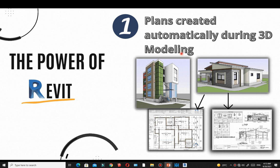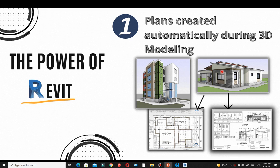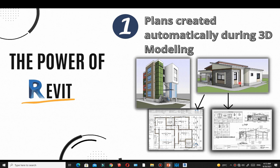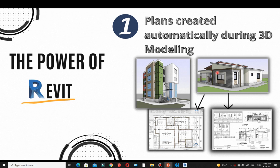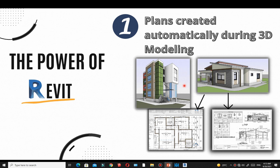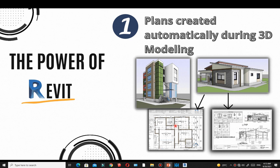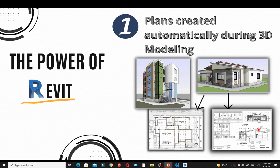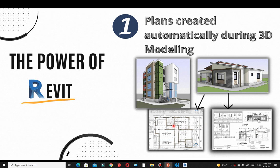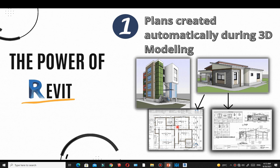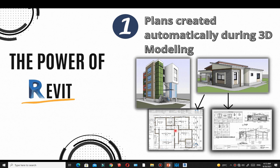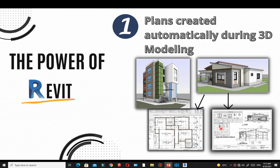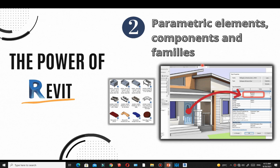The first advantage — or power — of Revit is that plans are created automatically during 3D modeling. As you model your walls, floors, and everything else, the plans will be available for you to extract. You do need to add annotation and detailing, but the tools are right there. You'll have your walls, doors, and windows ready, and adding annotations will be very fast.